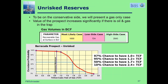Then I talk about unrisked reserves. To be on the conservative side, I'll only present the gas case — the value of the prospect increases if there's some oil along with the gas. The gas volume most likely is 1.6 TCF or 1,600 billion cubic feet; the low side is 724 BCF, high side is 2,845 BCF. Then this is the exceedance probability graph: the economic minimum is 1 TCF with a 97% chance to exceed it, 50% chance to have 1.7 TCF, and a 10% chance to have 2.4 TCF.